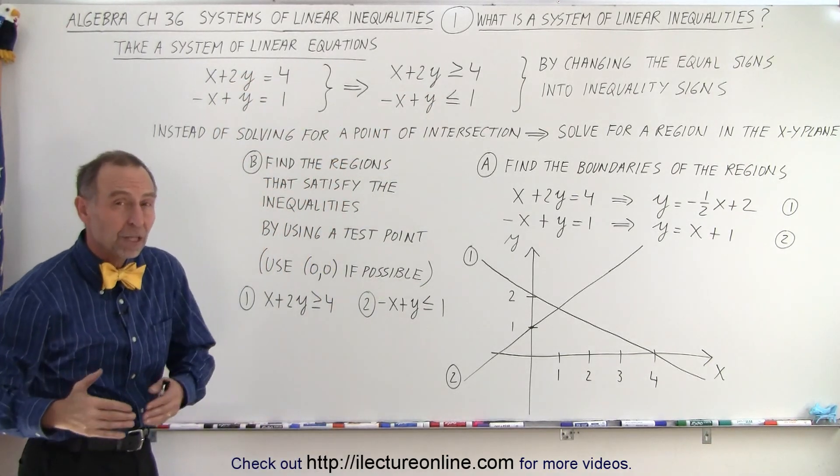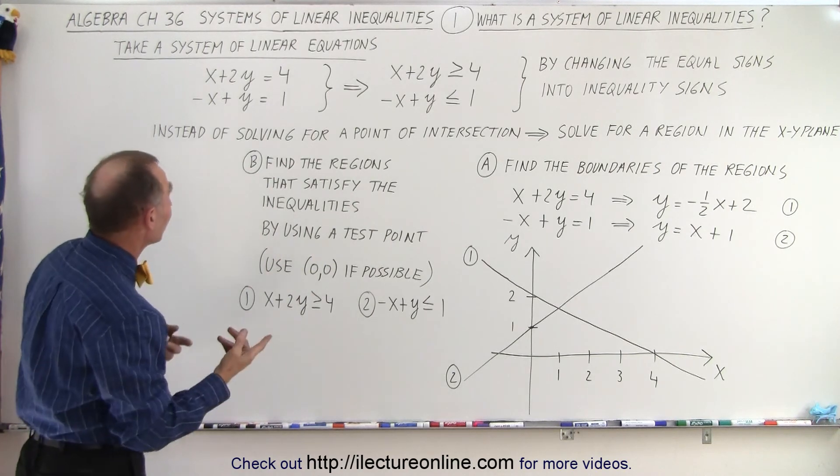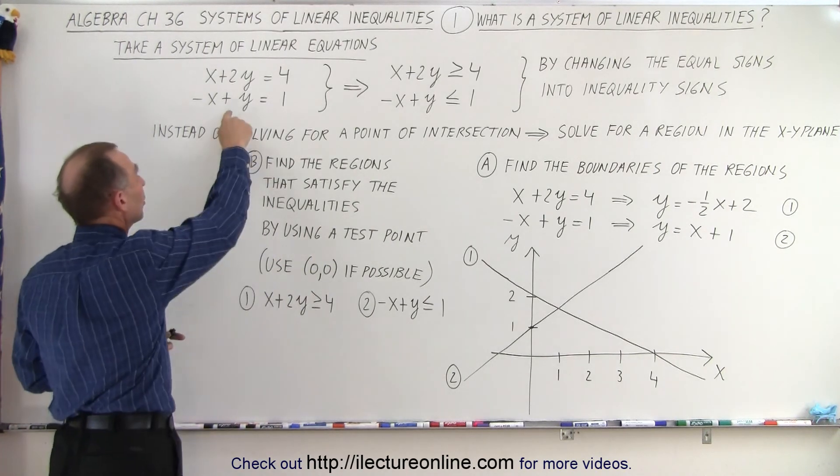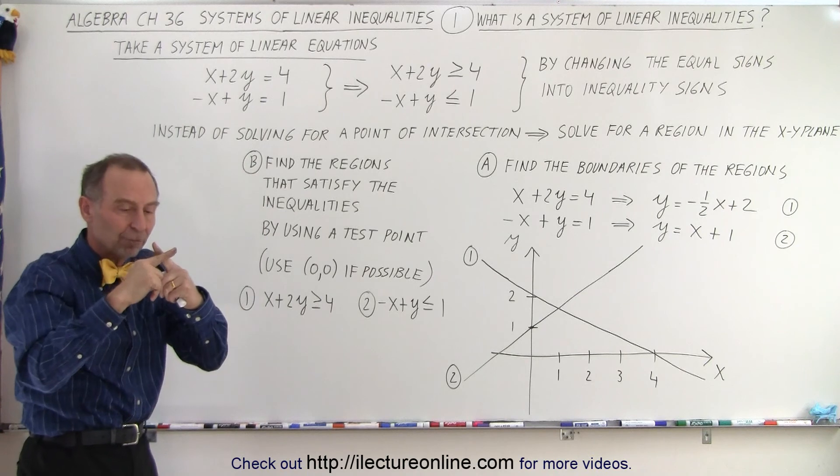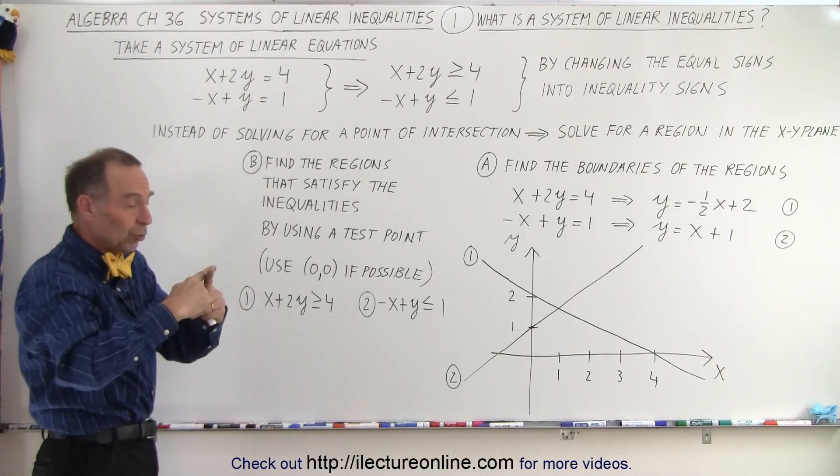Of course, that's not the only thing. What is the purpose? Well, the difference between the two is that here you're looking for a point of intersection. If there's two equations and two unknowns, you're looking for the point where the two lines cross.